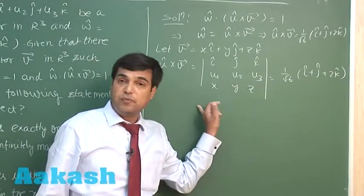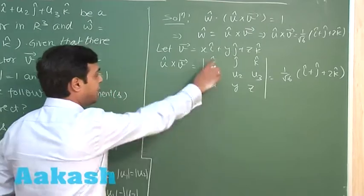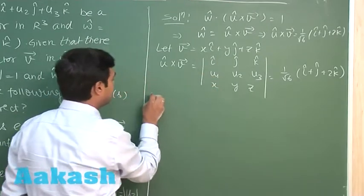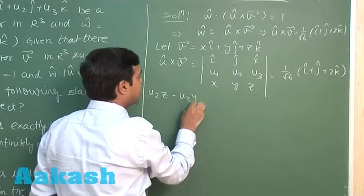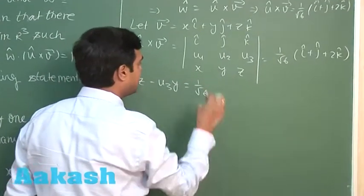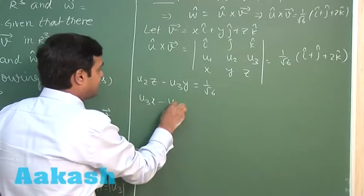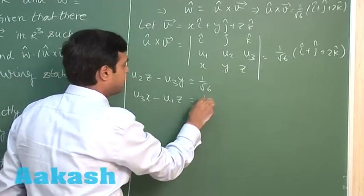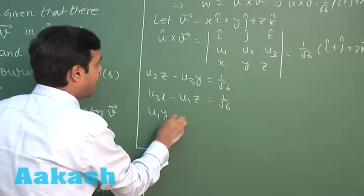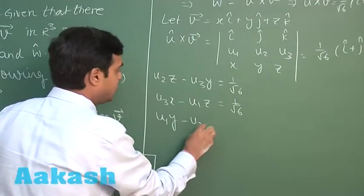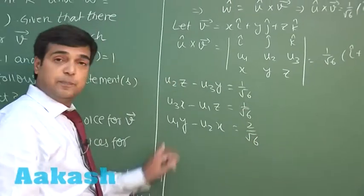Simplifying and equating coefficients of i, j, k on each side: from i we get u2·z − u3·y = 1/√6; from j we get u3·x − u1·z = 1/√6; from k we get u1·y − u2·x = 2/√6.